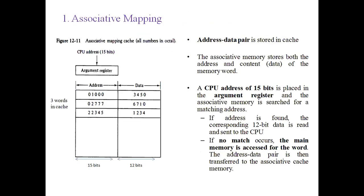In associative mapping, addresses are represented in octal numbers — each octal digit is encoded to 3 bits. The CPU always generates a 15-bit address, which is given to an argument register. The cache memory stores address-data pairs. Whatever 15-bit CPU address is generated, it needs to be mapped to a 12-bit data value in the cache memory.